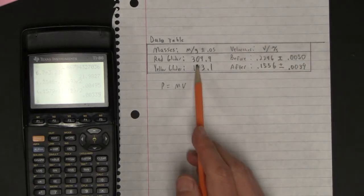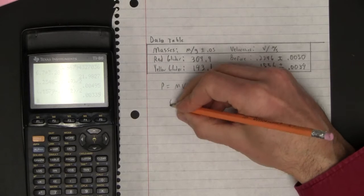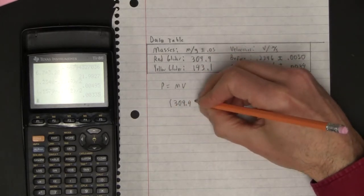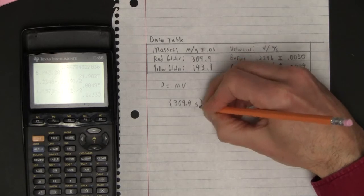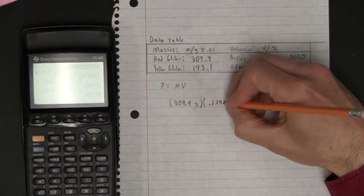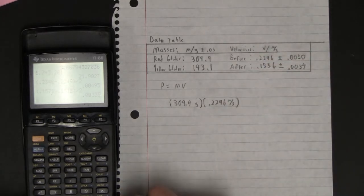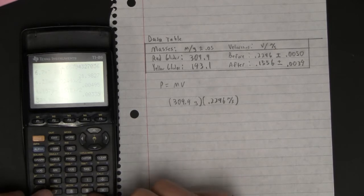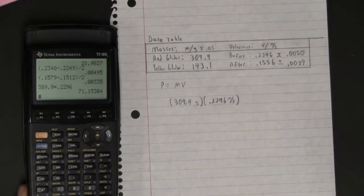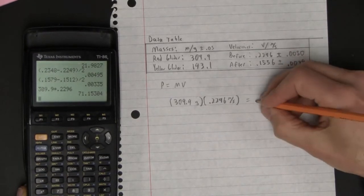So before it was just the red glider moving. It was going that fast. So the momentum is 309.9 grams times .2296 meters per second, and that is 71.15. I'm just going to say that that's 71.2.